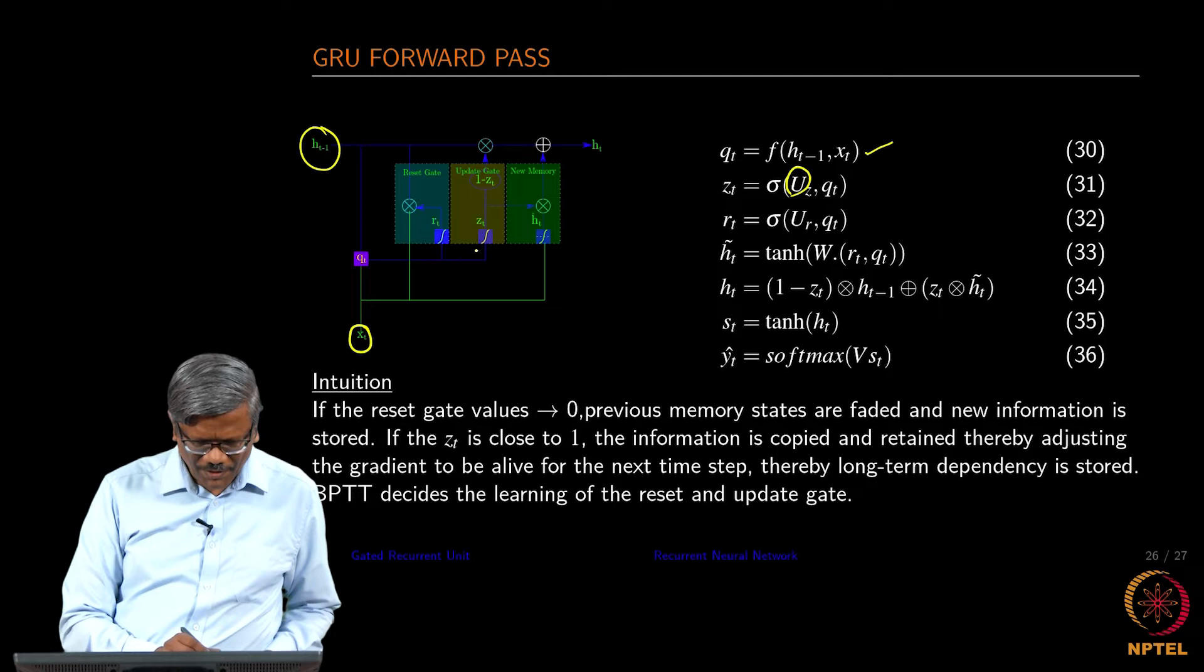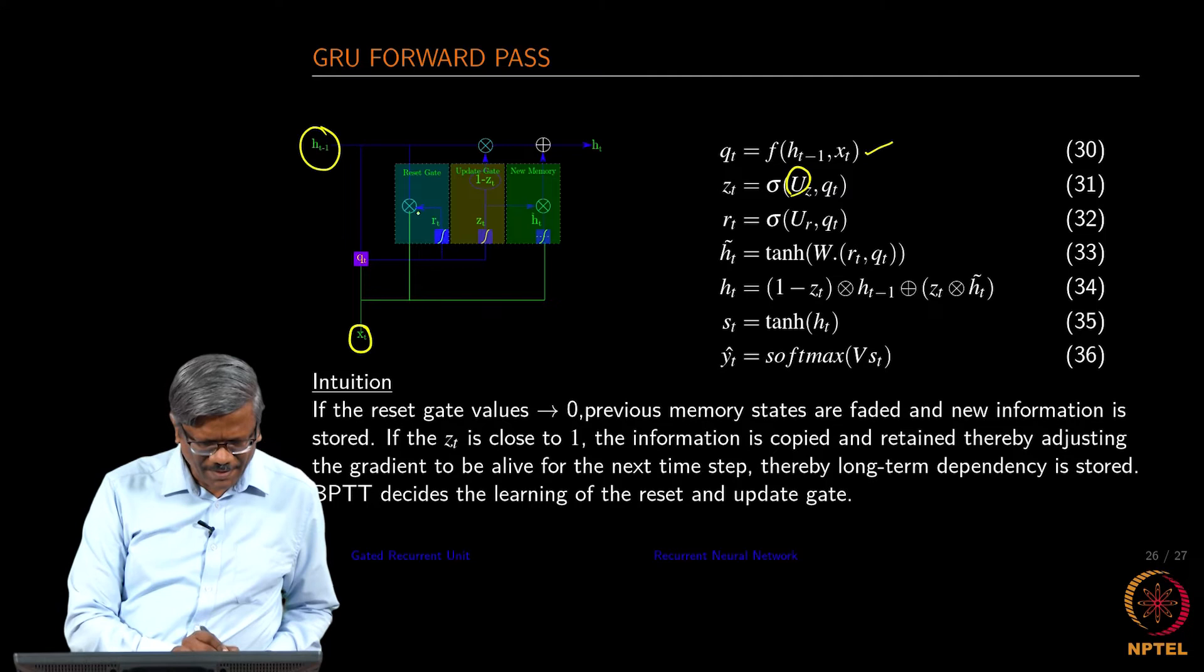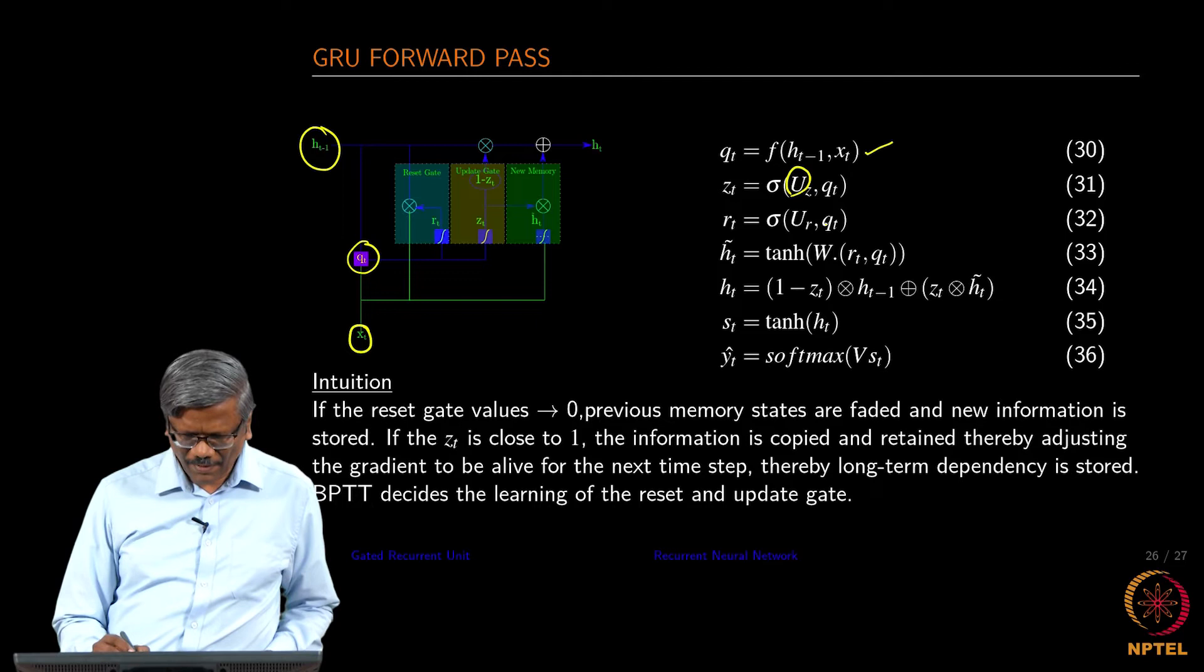We have a new z, and then we compute z_t, and then we compute the reset gate using q_t.